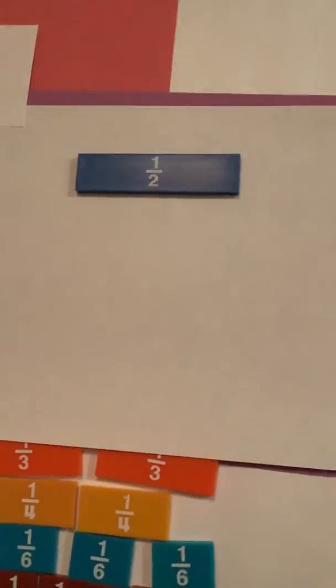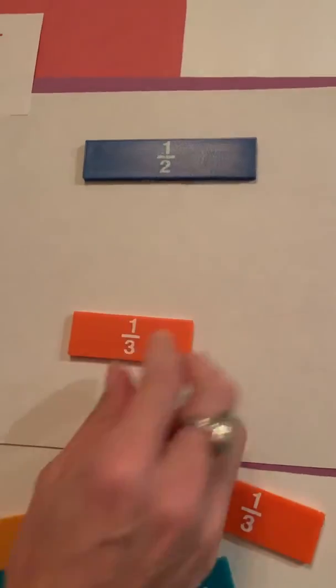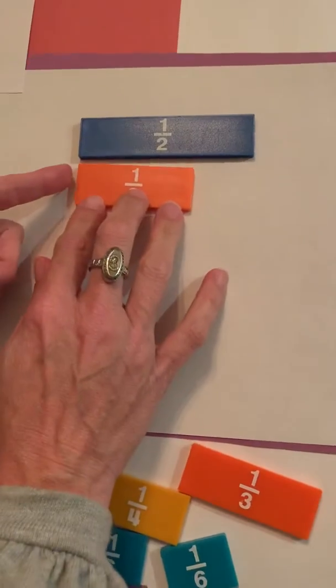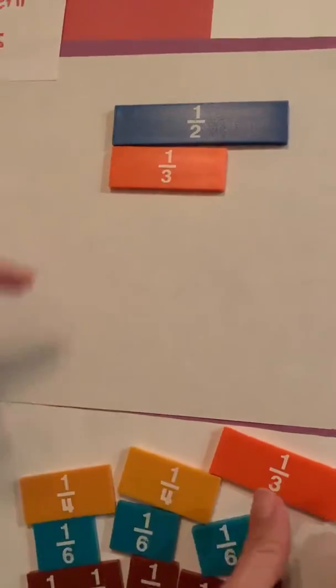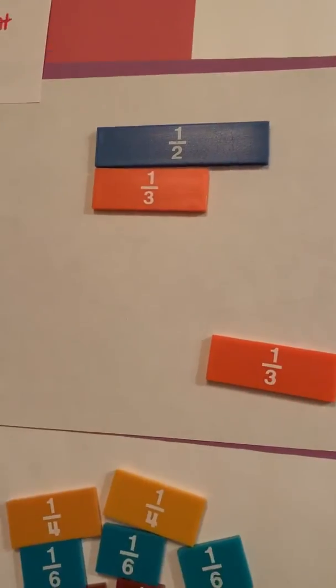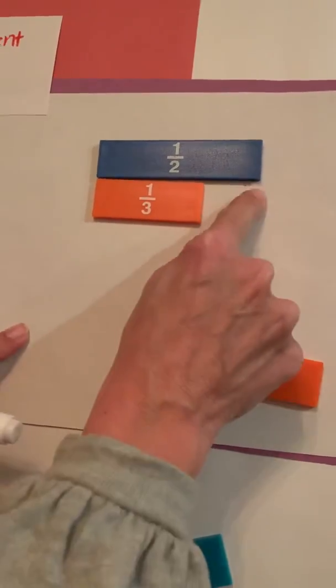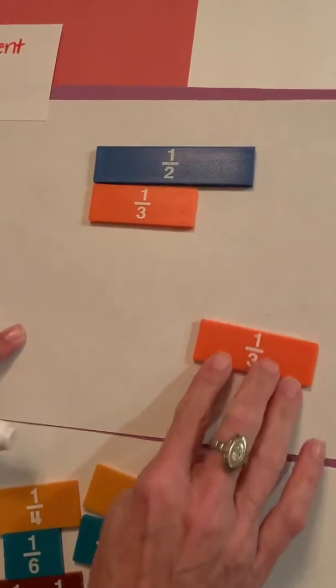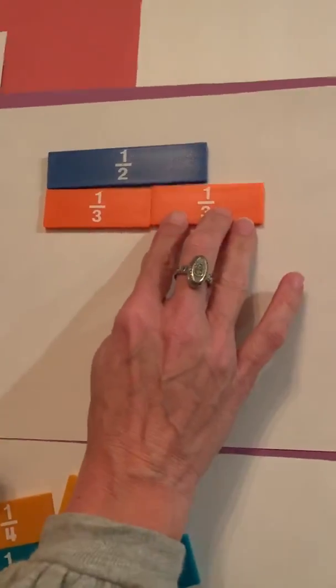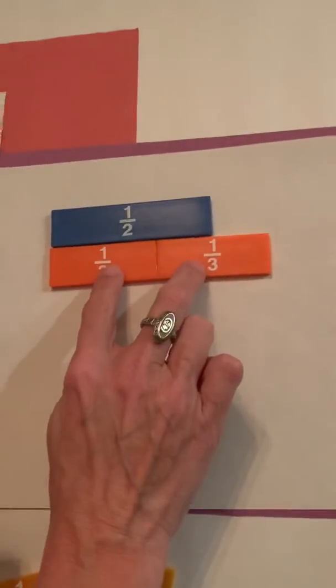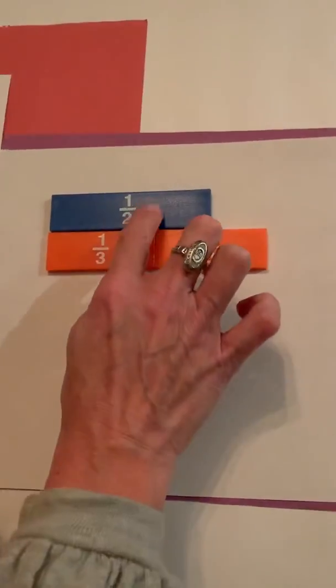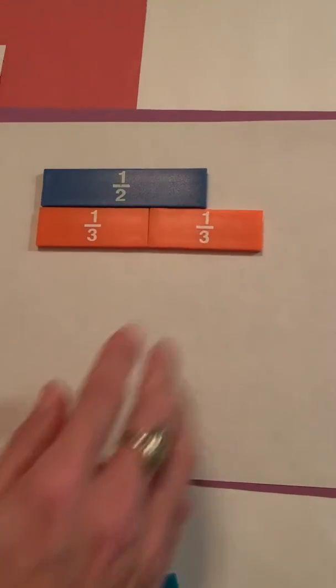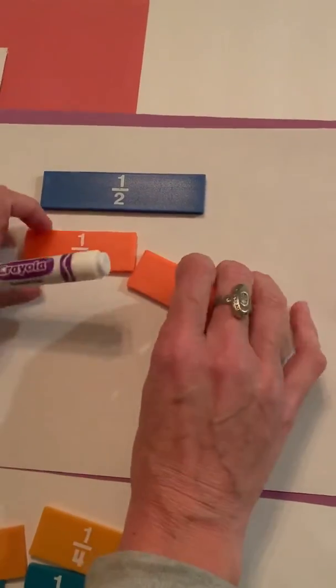So let's move on over and let's look at what we can find that is equivalent to one half. So I'm going to start with my thirds. Remember what we said, we want to have it line up, start at the same spot. So one third, I can see it's not equal to a half yet. So if I bring up another third, I can realize that two thirds, one third, nor two thirds is going to be equal to one half. So I would not be able to write that as an equivalent fraction.